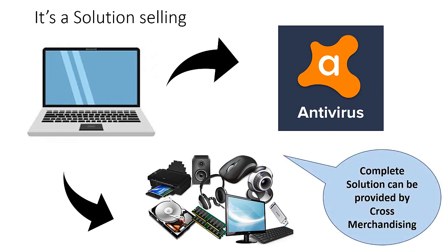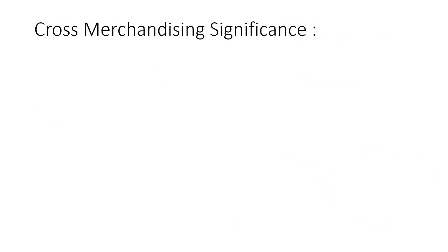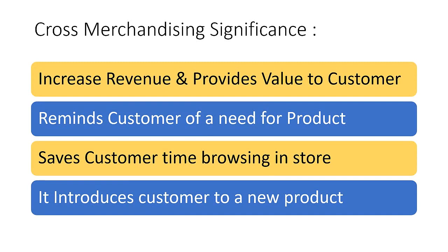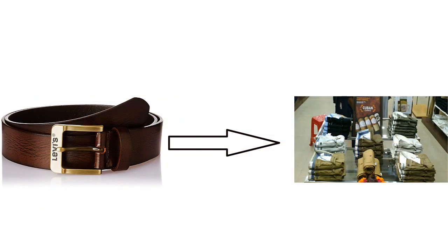What does cross merchandising do for customers and retailers? First, it increases sales for the retailer and provides value for the customer. Second, it reminds customers of a need — it helps customers realize they need another product to go along with their primary purchase. For example, if you place a belt beside a trouser display, the customer might get tempted to buy the belt along with the trouser.